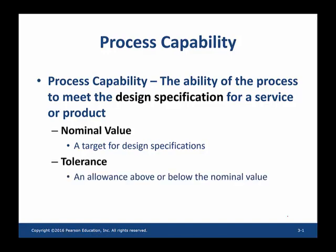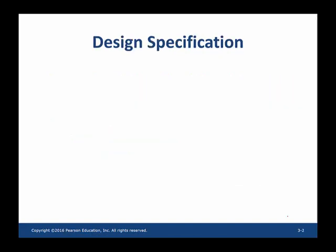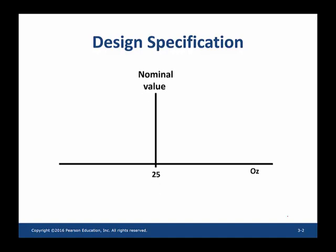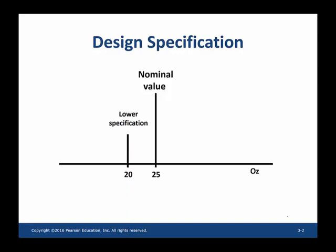An example of how design specification works: I'm supposed to make a 25-ounce water bottle. The nominal value in this case is 25 ounces. I give myself a tolerance when I produce this water bottle, so I cannot go below 20 ounces — that is my lower specification. I cannot fill water less than 25 ounces and sell it at the price of 25 ounces, so I'm vulnerable to lawsuits.